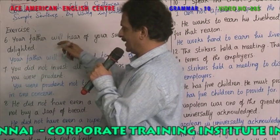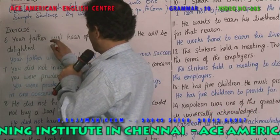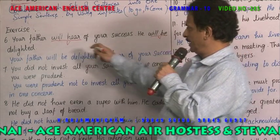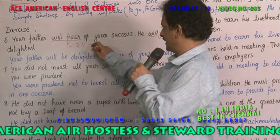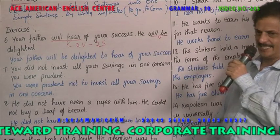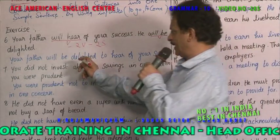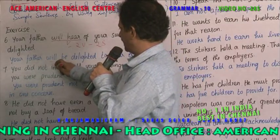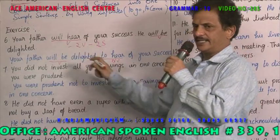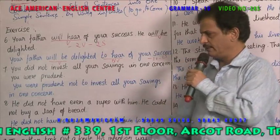Example 1: 'Your father will hear of your success' — 'will hear' is a verb. 'He will be delighted' — 'will be' is a verb. So there are two verbs and two sentences. To combine them, 'will hear' changes to 'to hear': 'Your father will be delighted to hear of your success.' Now only one verb remains, so it's one sentence.